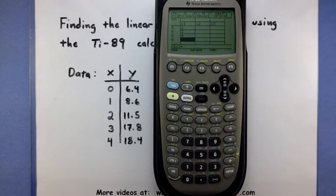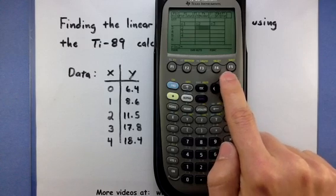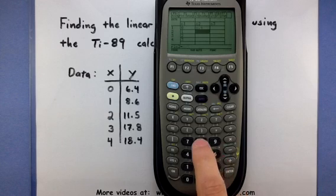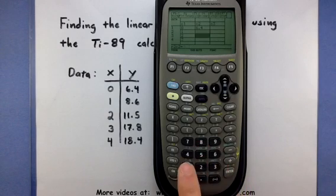There you have it. I'll use my arrow buttons to start the next column, and I'll enter in my Y values, 6.4, 8.6, 11.5, 17.8, 18.4, and there you have it.